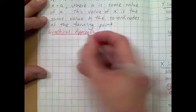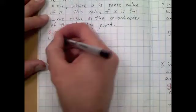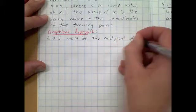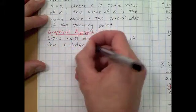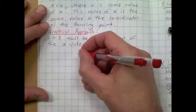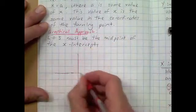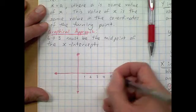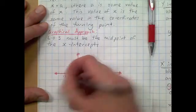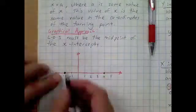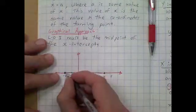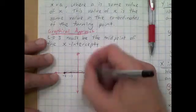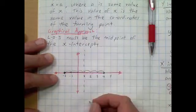Let's look at a graphical approach to the line of symmetry. We're looking at the midpoint between two corresponding points — our x-intercepts. We have x equals 4 and x equals negative 2. The middle of the distance between those two points would be 3, so we go back 3, and there is our midpoint — that's our line of symmetry.